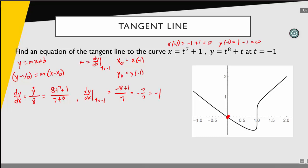And that seems appropriate given that point and this curve. Now all we have to do is put everything together. Once again, we have point slope form of our line.